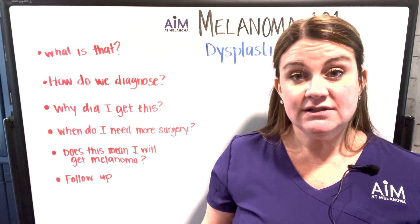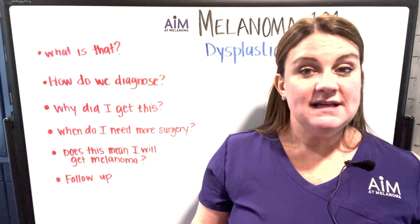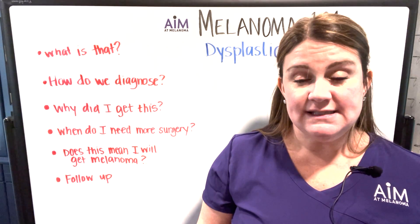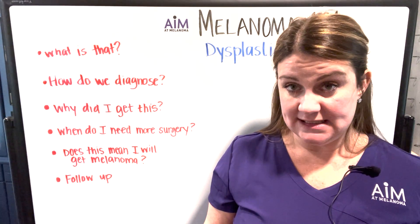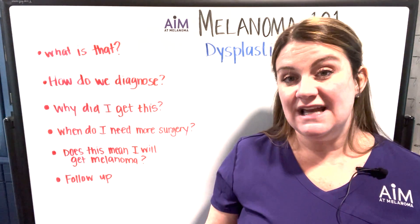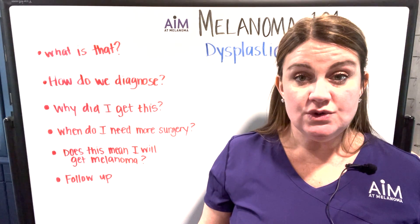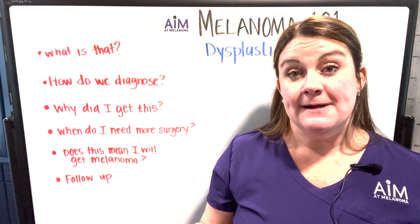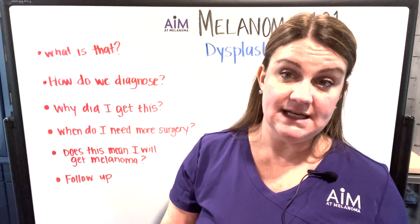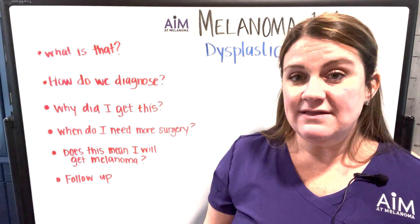Folks that have mild dysplasia or mild atypia in their biopsy do not require a re-excision — the same thing for moderate dysplasia. Really the only folks that will have re-excisions are those with severely dysplastic moles or severe atypia if the margin is positive. The goal is just to get a negative margin; you don't need a specific number of millimeters the way you do with melanoma. You just need a clear edge so there are no more mole cells at the border of the biopsy.